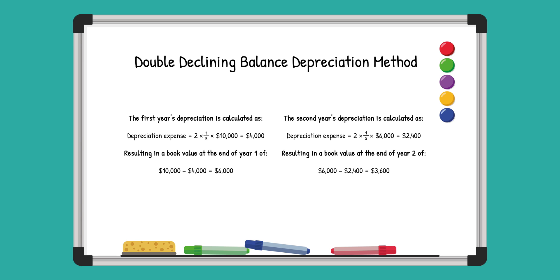In the second year, starting with that $6,000, the depreciation expense is now $2,400, and that leaves a book value of $3,600 at the second year's end.